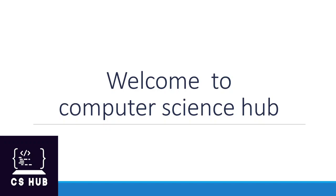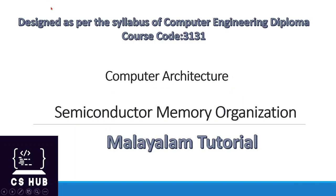Hello everyone, welcome to Computer Science Hub. This video is designed as per the syllabus of computer engineering diploma. The subject is Computer Architecture, course code 3131. We are at the first module. The first module is covered in the first two parts: instruction, bus, bus architecture, and the instruction cycles.